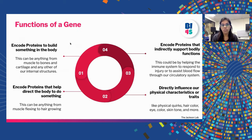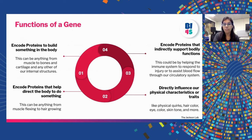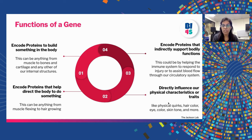There are various functions of a gene. The first function is encoding proteins to build something in your body — this can be anything from muscles to bones and cartilage and other internal structures. It could also be encoding proteins to help direct the body to do something, like muscle flexing or hair growing. The third function could be encoding proteins that indirectly support bodily functions, such as helping the immune system respond to injury or assisting blood flow. The fourth could be directly influencing physical characteristics like hair color, eye color, and skin tone.